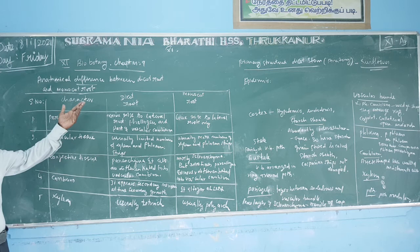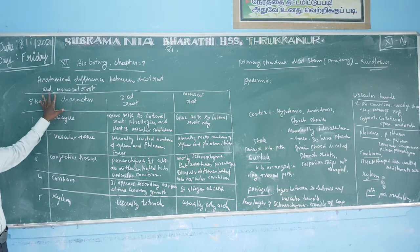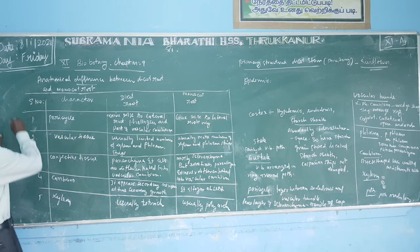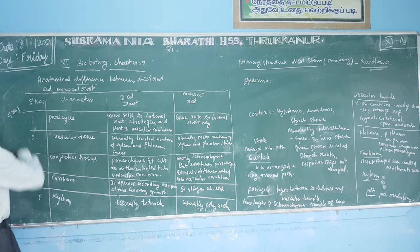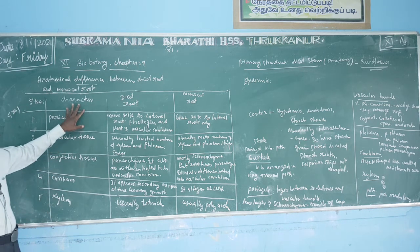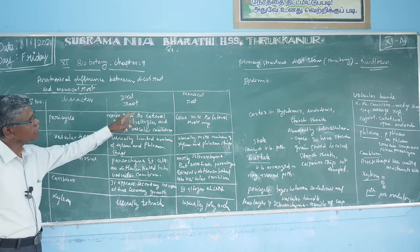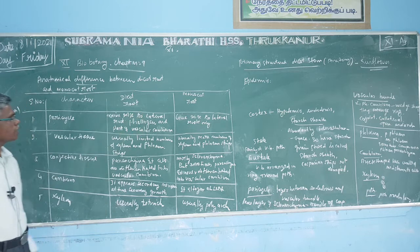The anatomical difference between dicot root and monocot root is one important five-mark question. It is character-wise: dicot root and monocot root.